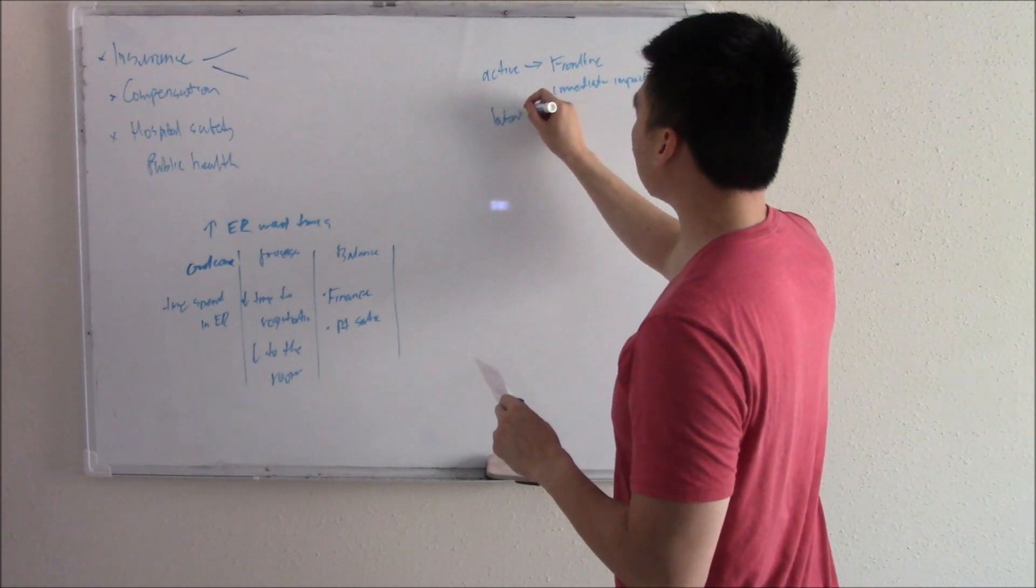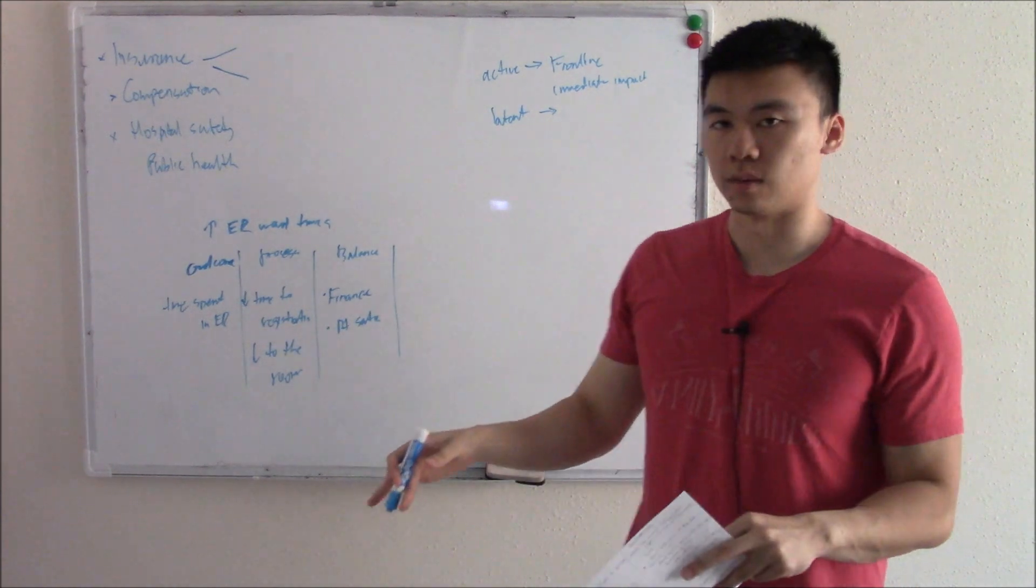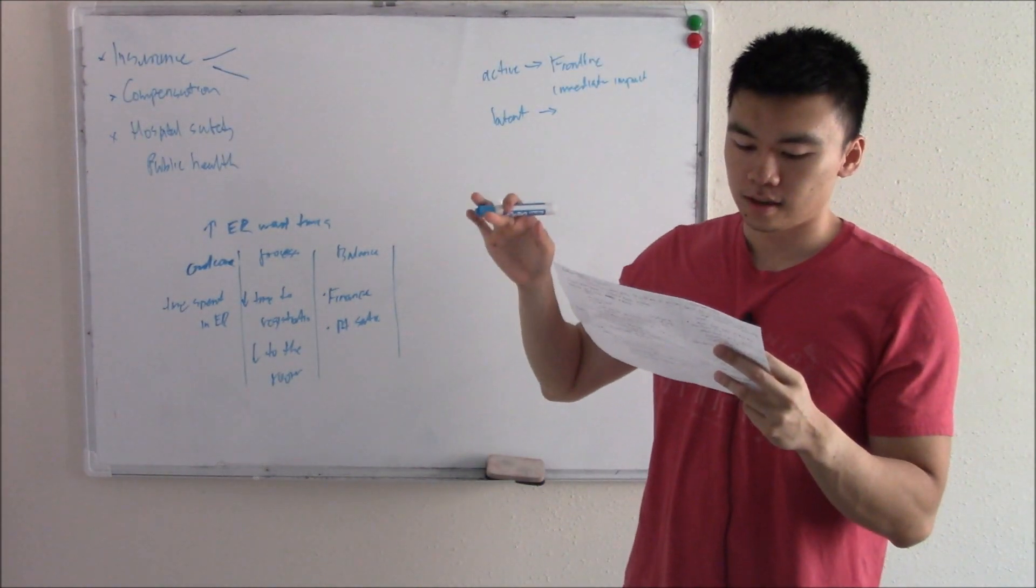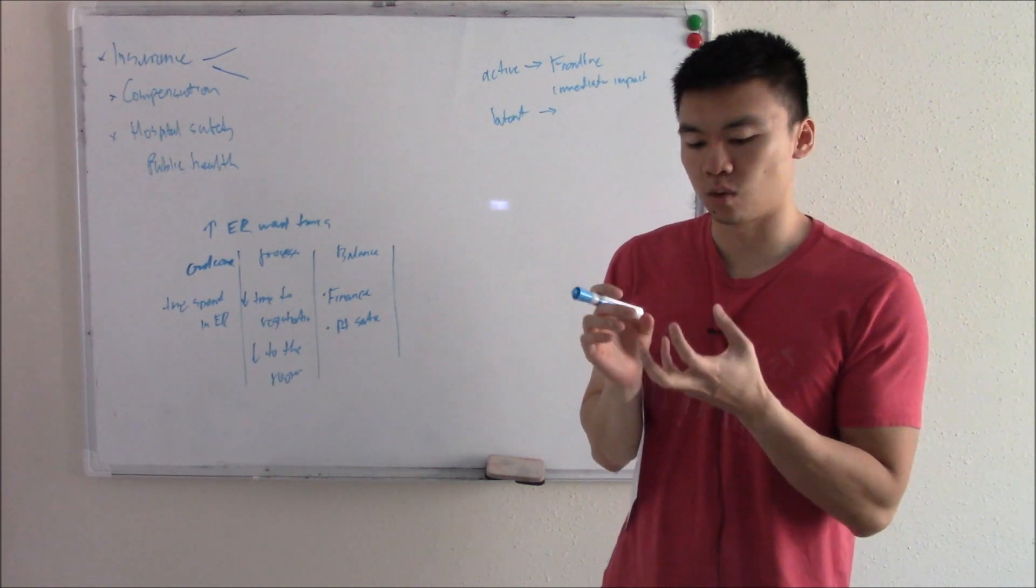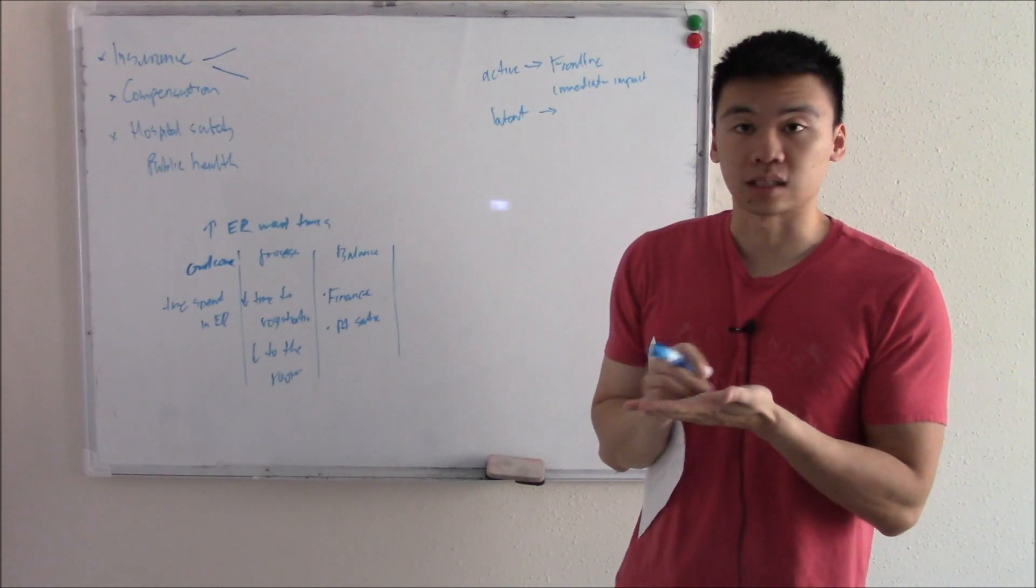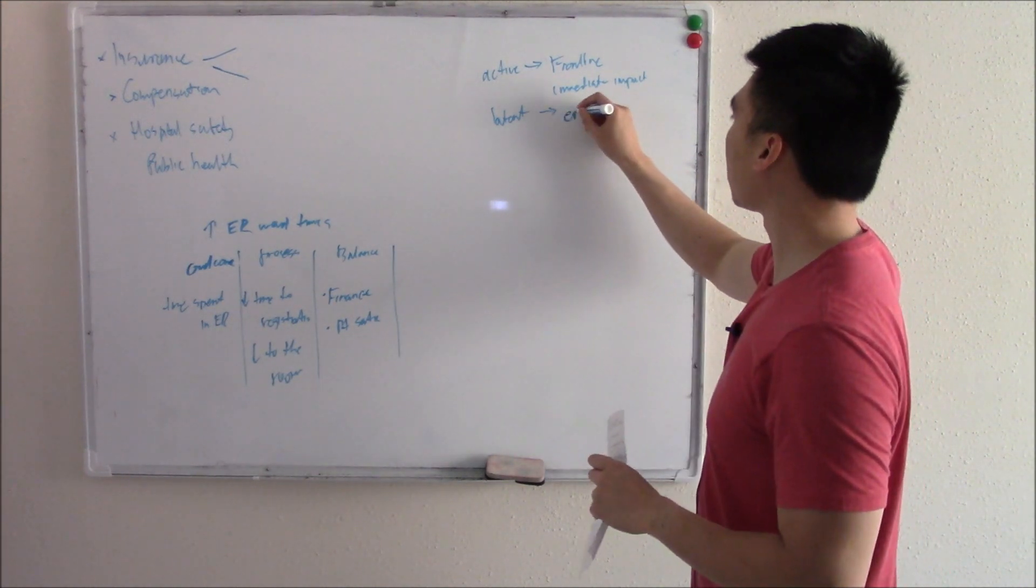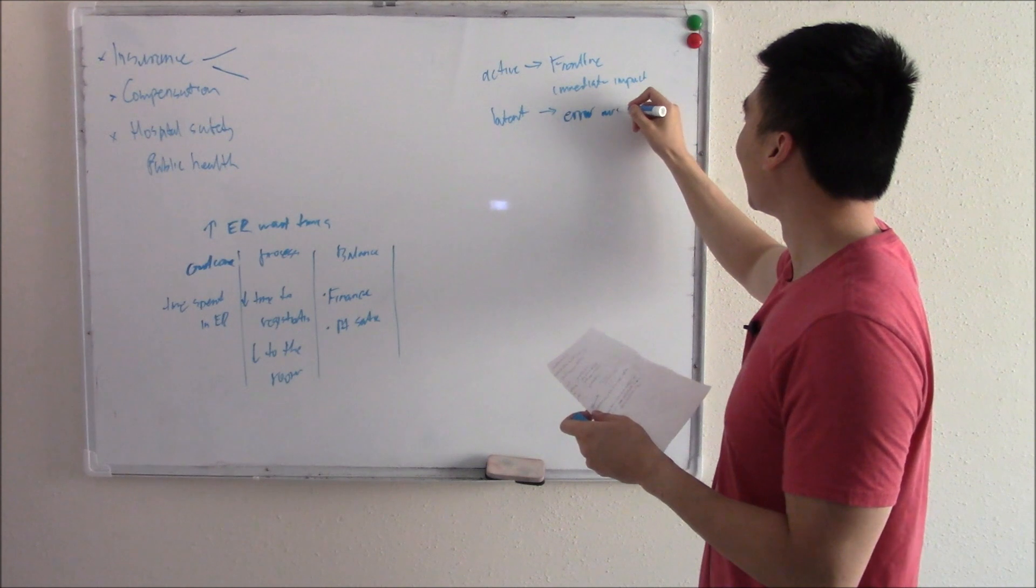There's something called a latent error. Latent means hidden, right? So this isn't the frontline provider. Maybe it's someone further back. Maybe it's someone else, but it can still affect care. It's kind of like an error waiting to happen. An error waiting to happen. Maybe the drug manufacturer accidentally put the wrong expiration date. All right. It's an error waiting to happen. It's latent. It's latent error, right? Waiting to happen.